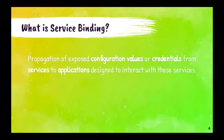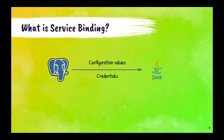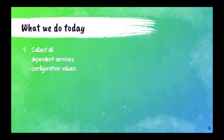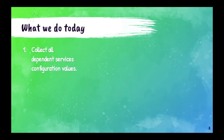Here is a more pictorial elaboration of that definition. Let's see how things are being done today. The first thing you would do is collect all dependent service configuration values. Today, various services like Cassandra, MongoDB, or any service announce their configuration values differently. It would be a manual effort to figure out how they announce those values and then gather all of them — which can be very cumbersome and tiring.